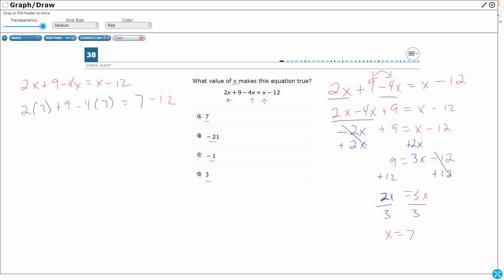So 2 times 7 is 14 plus 9 minus 4 times 7, that gets you 28. And then 7 minus 12 is minus 5. So now all we're doing is simplifying. So all of this should equal minus 5. So let's add these first two first. 14 and 9, that's going to make 23 minus 28 equals negative 5.